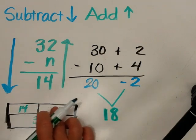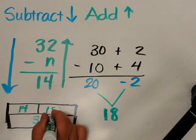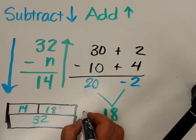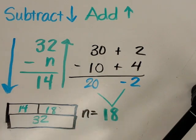Let's plug 18 in here and see if that works. 14 plus 18 equals 32. So I now know that n is going to equal 18.